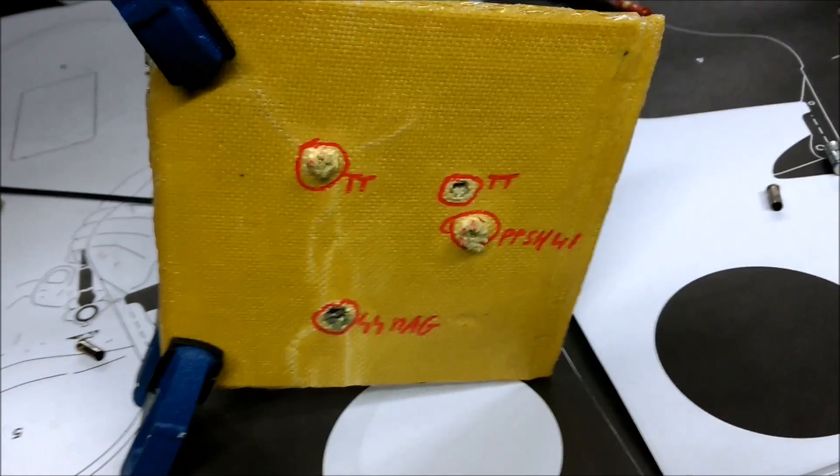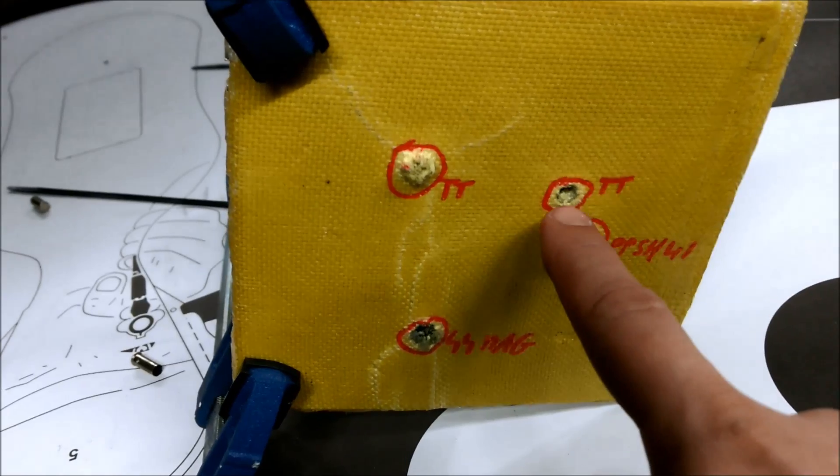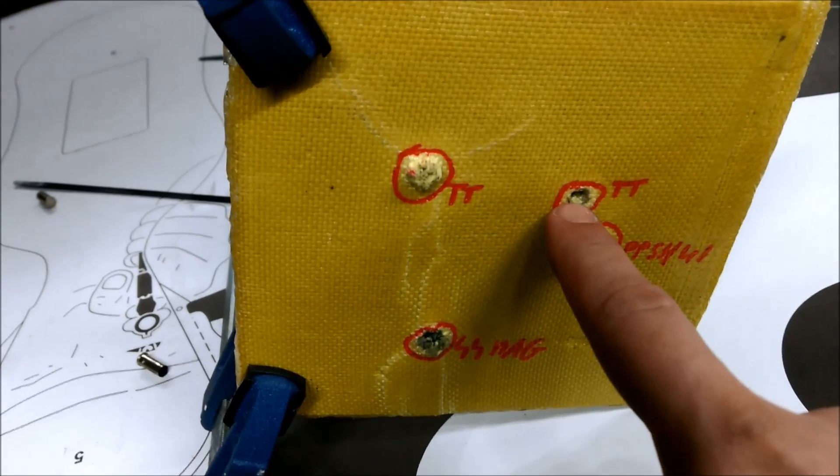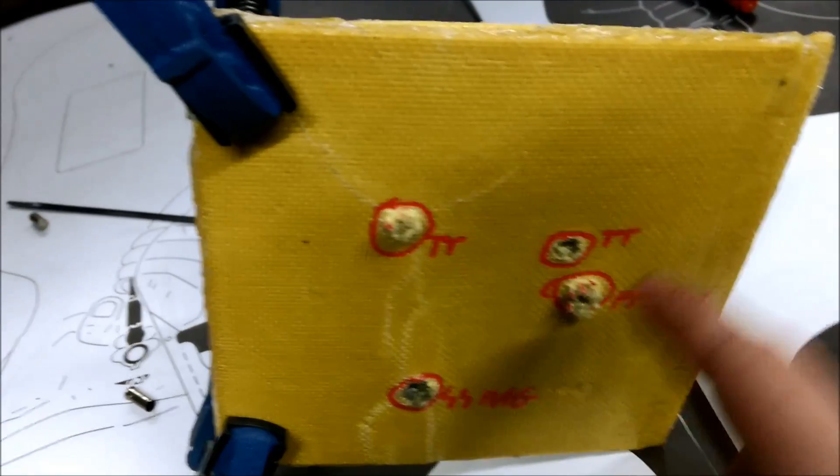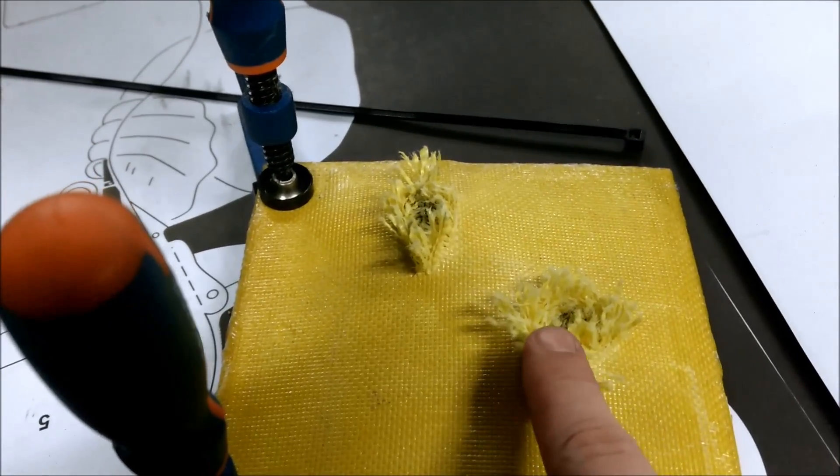Okay, so the last shot from the Tokarev, I hit over here and the bullet slipped through already delaminated Kevlar and went through the hole made by the PPSh. So this one went through.